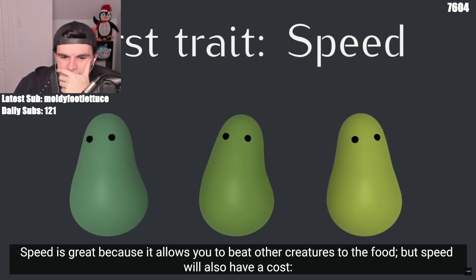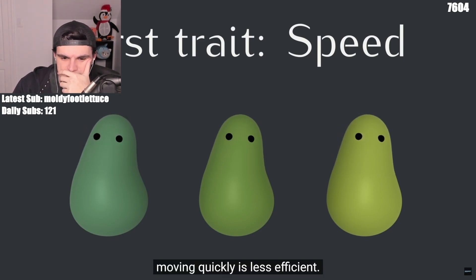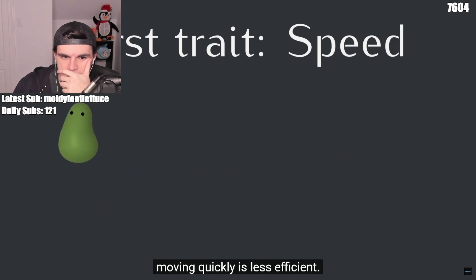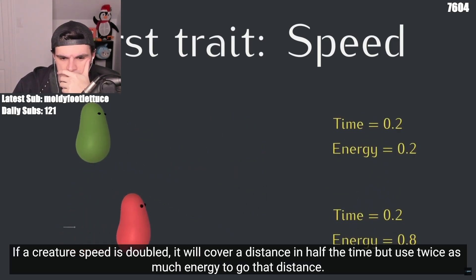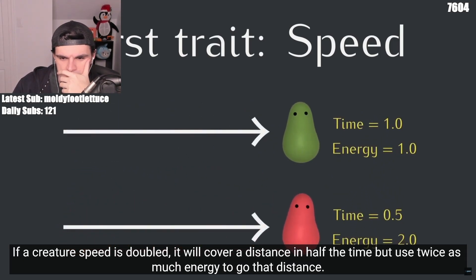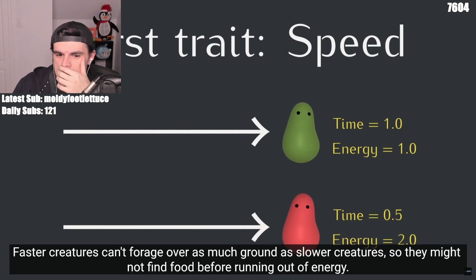Speed is great because it allows you to beat other creatures to the food. But speed will also have a cost: energy. Moving quickly is less efficient. If a creature's speed is doubled, it will cover a distance in half the time, but use twice as much energy to go that distance. Faster creatures can't forage over as much ground as slower creatures, so they might not find food before running out of energy.